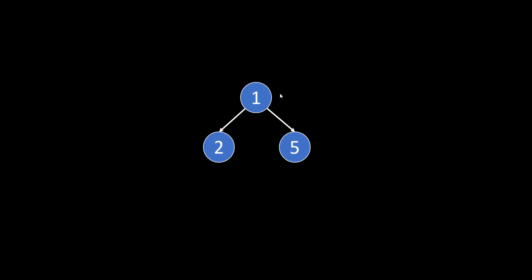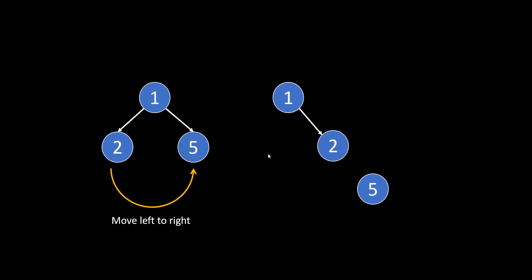Now let's see the recursive solution. Let's just take three nodes to make the process simpler. We know that we need to go in the manner root, left, and right and attach all the nodes on the right side. After one we need to attach two to the right, and after two, five will go to the right of two. What we are going to do is move two to the right of our root node that is one.